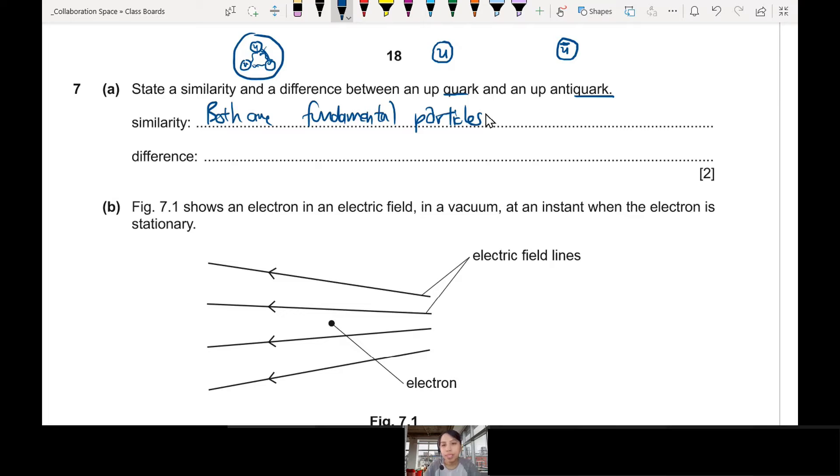One similarity between these things is they are quarks. Don't say they are quarks. Say these are both fundamental particles. One of the main differences is the anti-word. One is quark, one is anti-quark. Anti-matter is a class of matter where it is like your evil twin. So you can say one is matter, one is anti-matter.